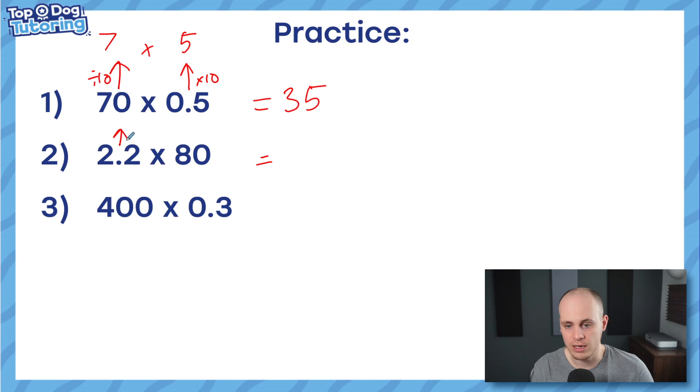Right, same again. I'm going to turn this one into 22 by timesing it by 10, but to balance it out, I'm going to divide this by 10 and make it 8. So now I'm left with 22 times 8, which is a much easier question to solve than 2.2 times 80. 8 times 2 is 16. 8 times 2 is 16, plus the extra 1 this time is 17. My answer is 176. Don't have to do anything to it.